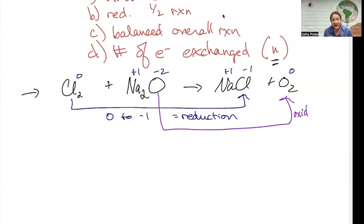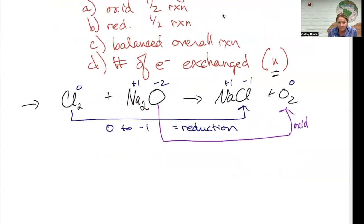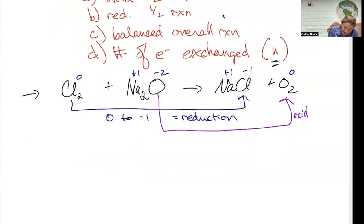I'm going to split into half reactions. The first one it asked me for is my oxidation half reaction. My oxidation half reaction is O minus two becomes O₂. I need to balance this. Oxygens need to be balanced.